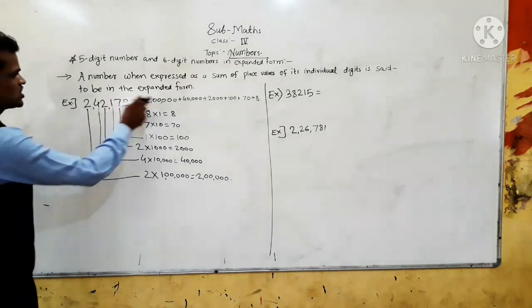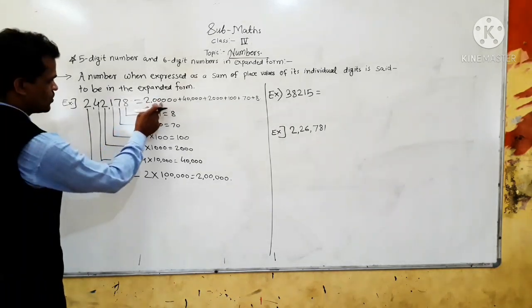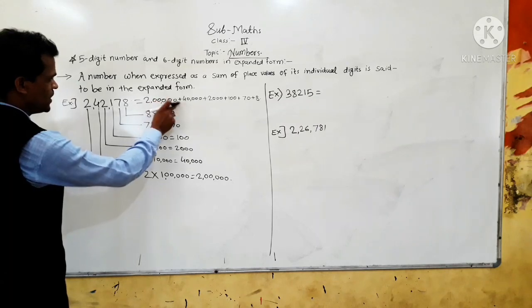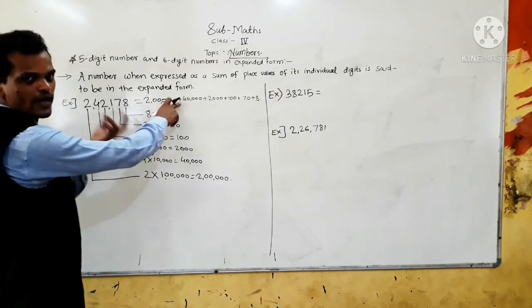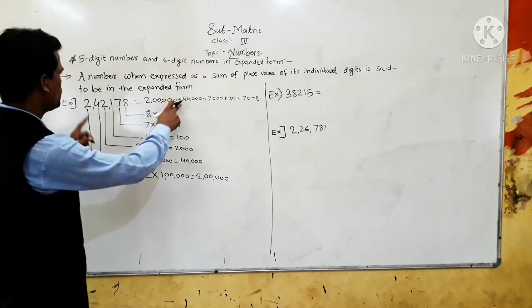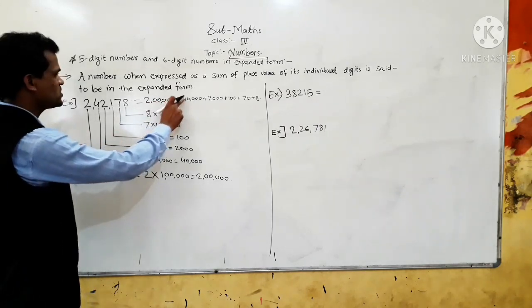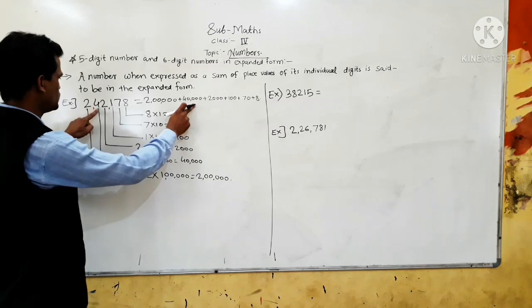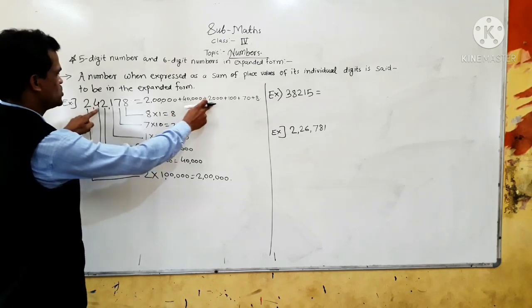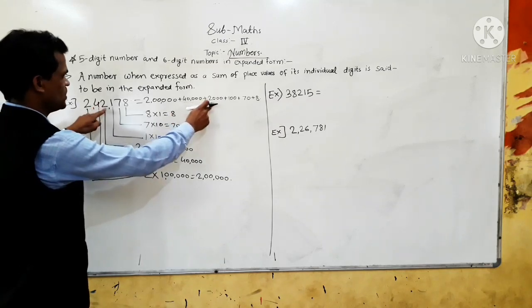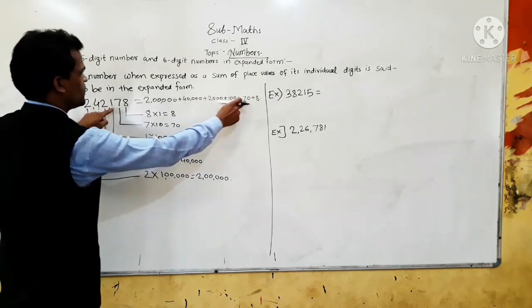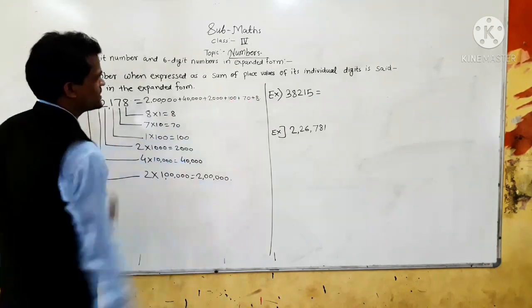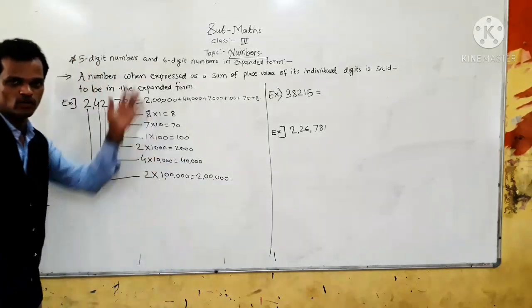So, the place value of this 2 is 2 lakh. Plus — sum means addition — so: 2,00,000 + 40,000 + 2,000 + 100 + 70 + 8. In this way, you have to write the number in the expanded form.